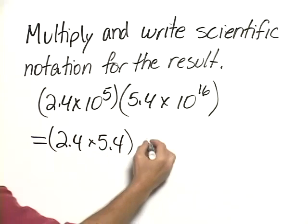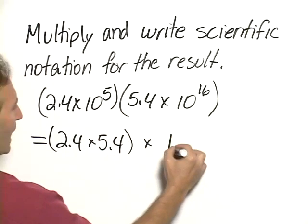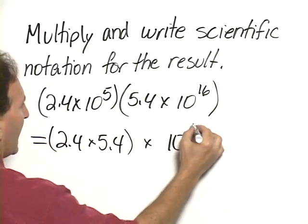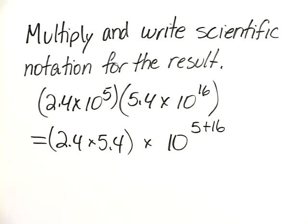And then multiply that times the power of 10s. Now the power of 10s, when we multiply those, we add the exponents. So 10 to the 5 plus 16.